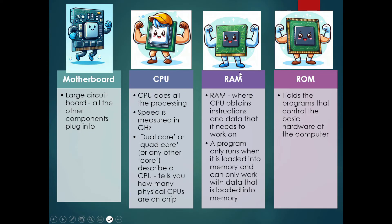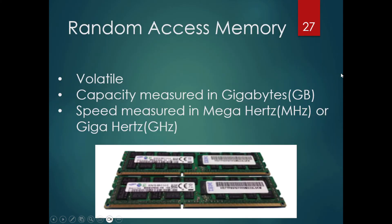RAM is where the CPU obtains instructions and data it needs to work on. A program only runs when it's loaded into memory and can only work with data that's loaded into memory. RAM is volatile, as we covered earlier. Its capacity is measured in gigabytes — for example, 16 GB or 32 GB of RAM — and its speed is measured in megahertz or gigahertz depending on the make and model.